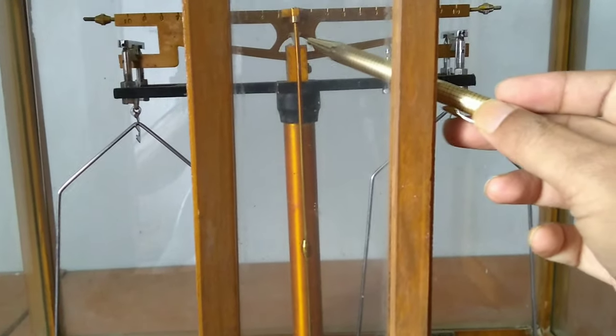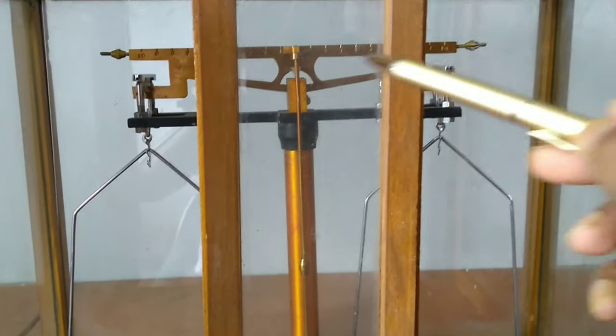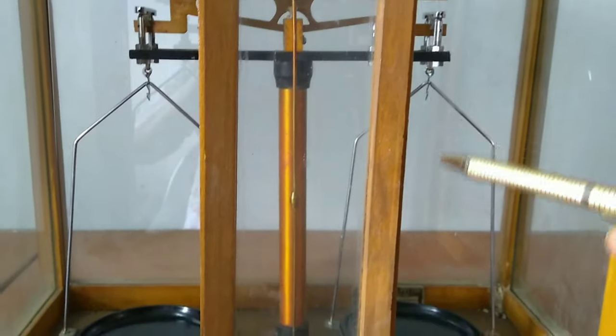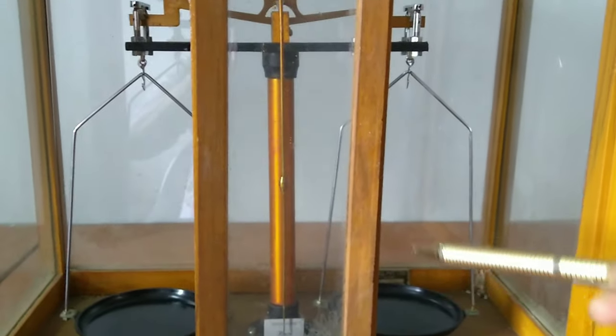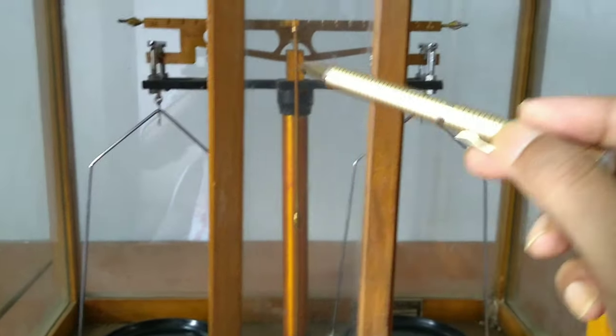In the beam balance, this is an ideal lever which is a light rod and on both sides you have two pans. This is one pan and you have also another pan where you put weight.